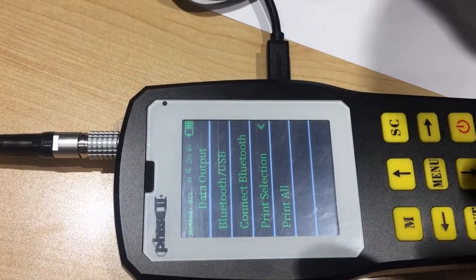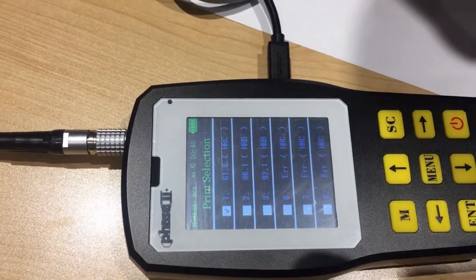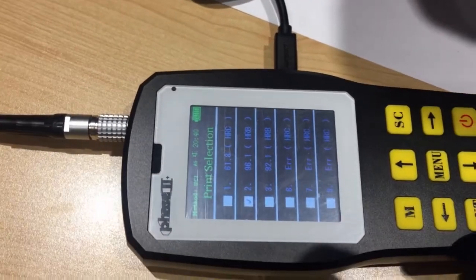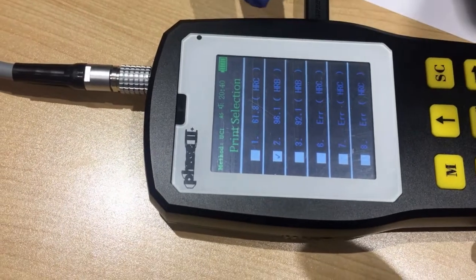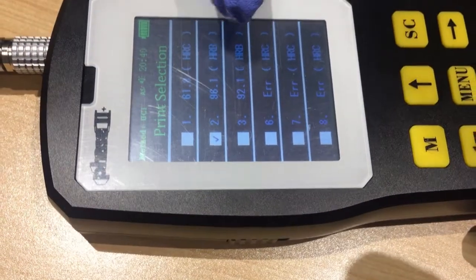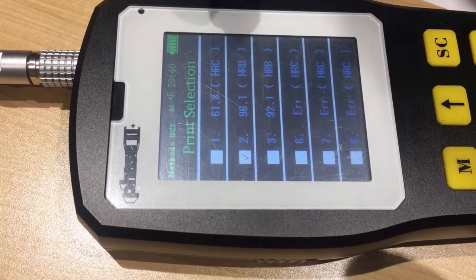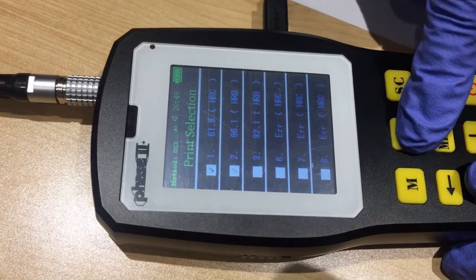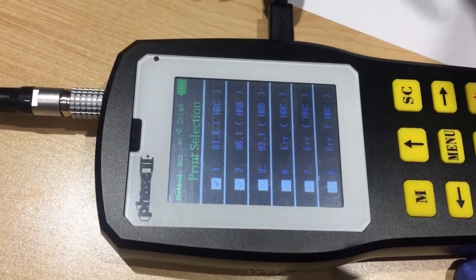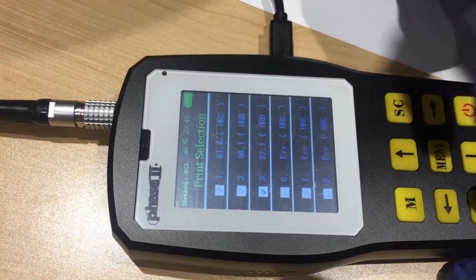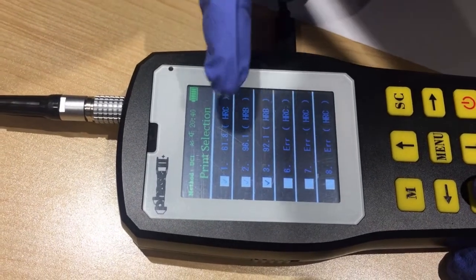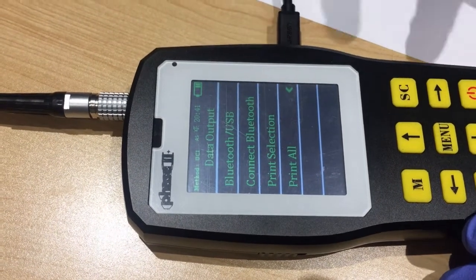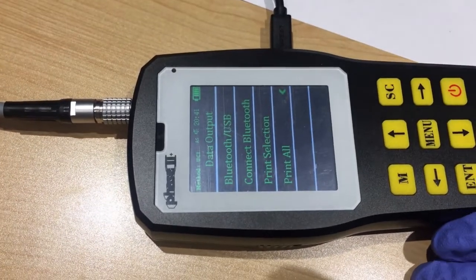Print selection, that means you want to print the selected one you want. To select one, please see the check mark here and press enter. If you see the check mark is red, that means you have selected it. And you can select multi-groups to print them. And after you move to another one, the selected one will have a gray check mark. Or you can choose to print them all.